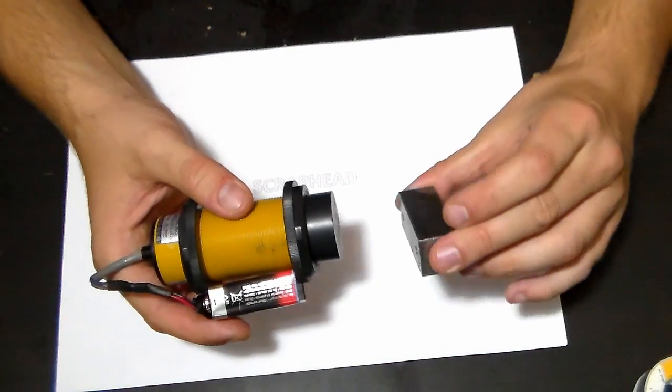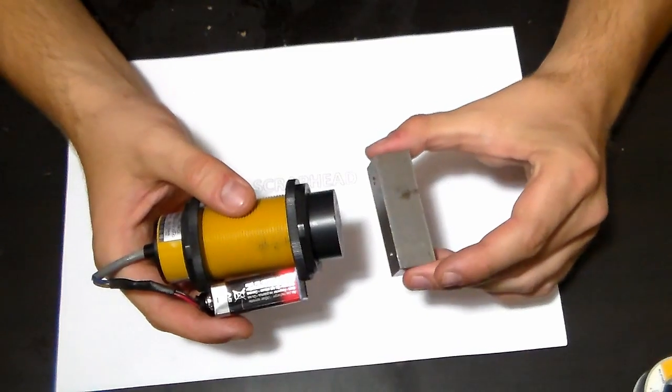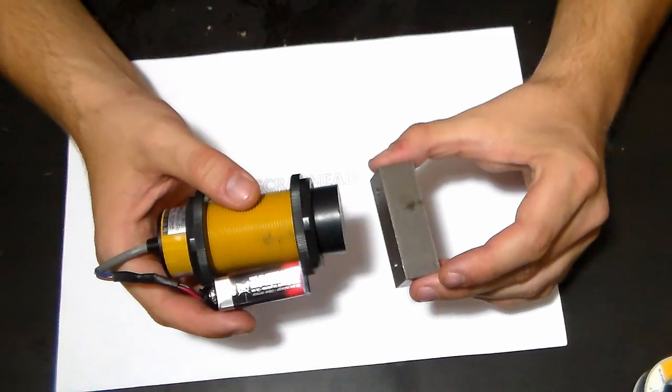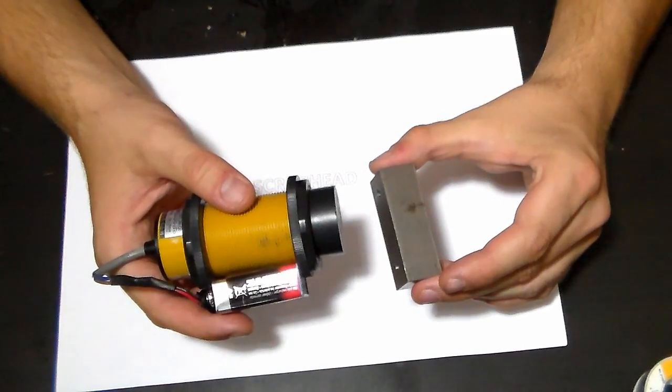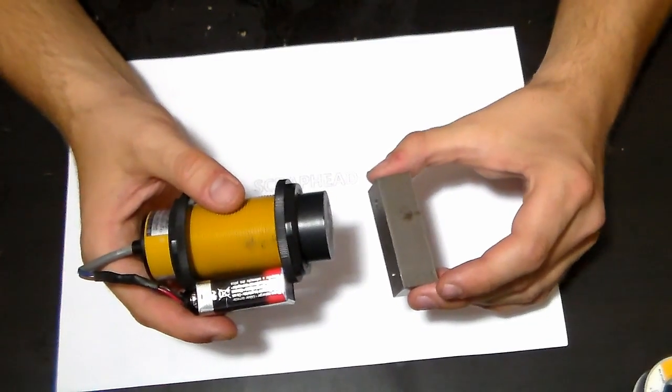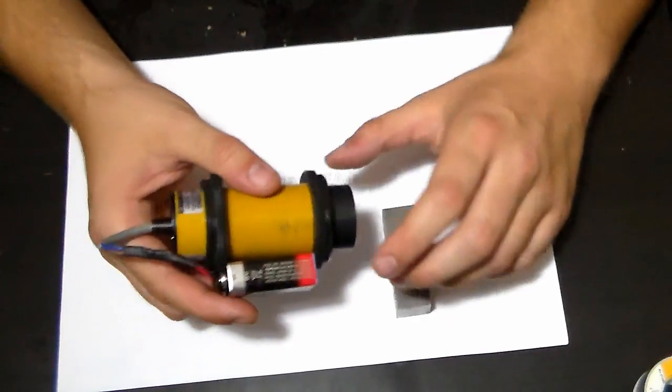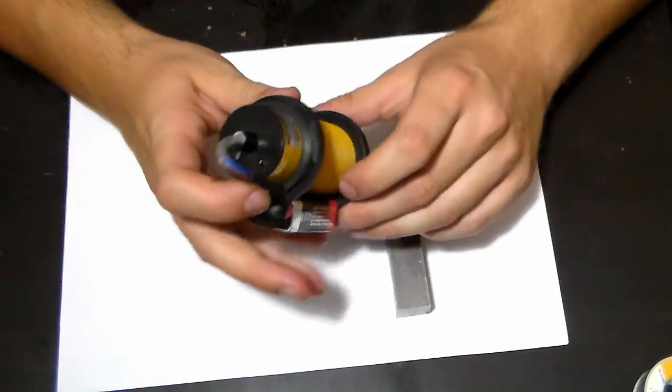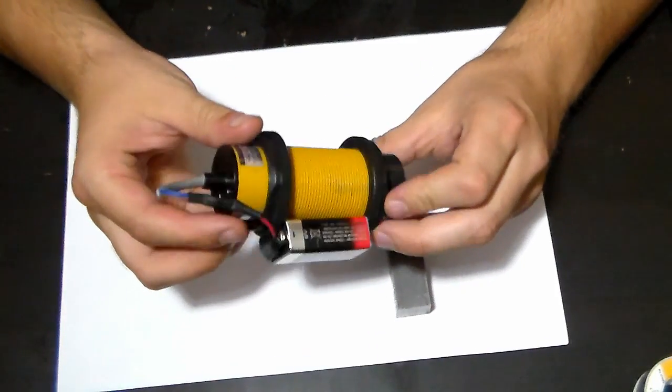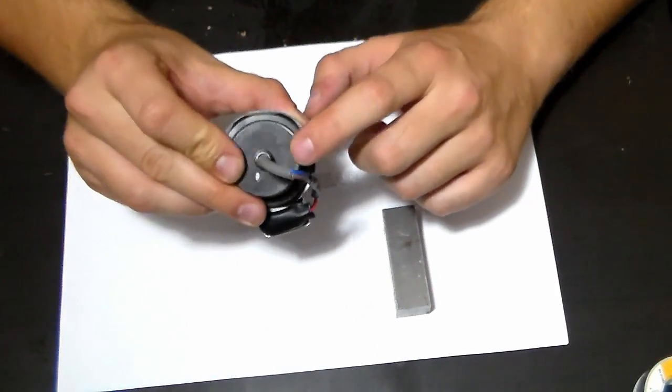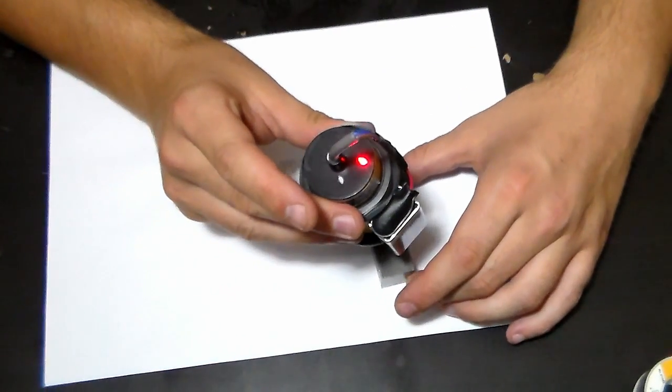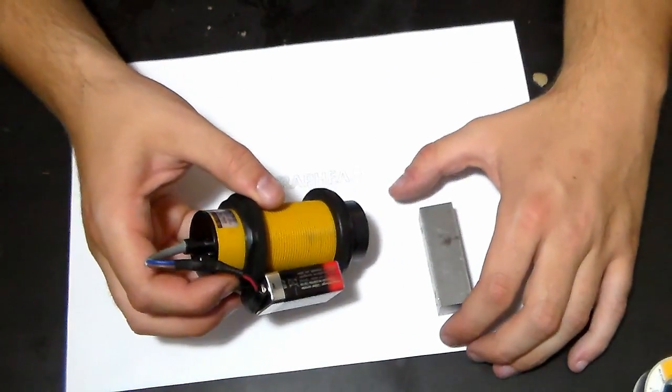If a metallic object like this piece of steel approximates the sensor, eddy currents are caused and they change the amplitude of the oscillatory circuit. The electronic system inside the sensor realizes this and gives out a signal like this illuminated red LED.